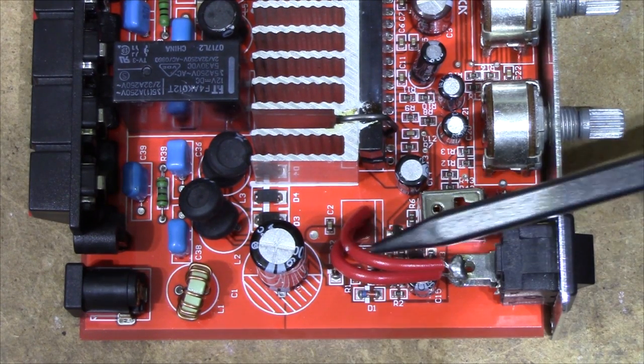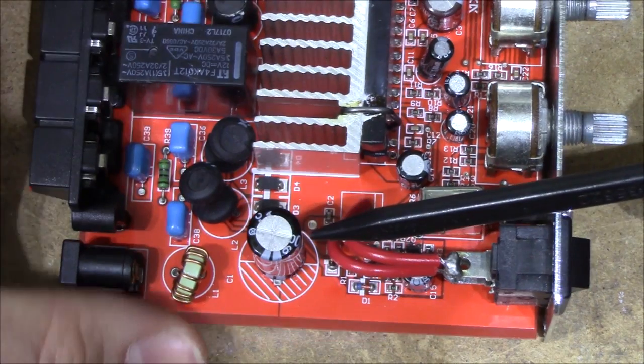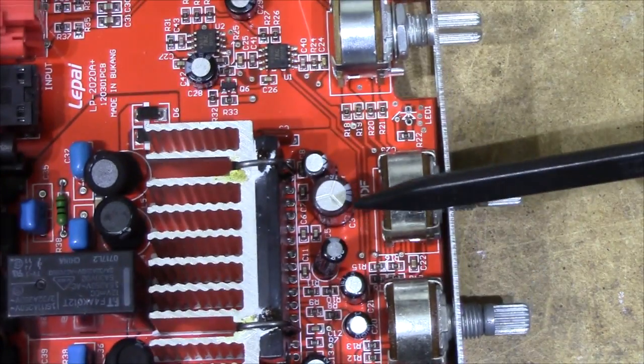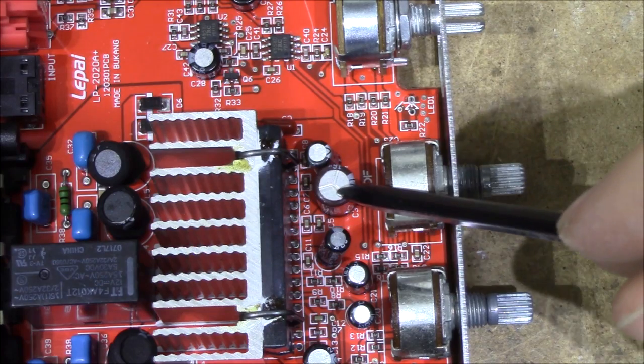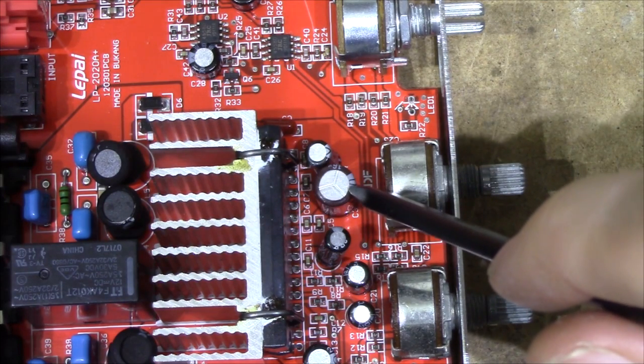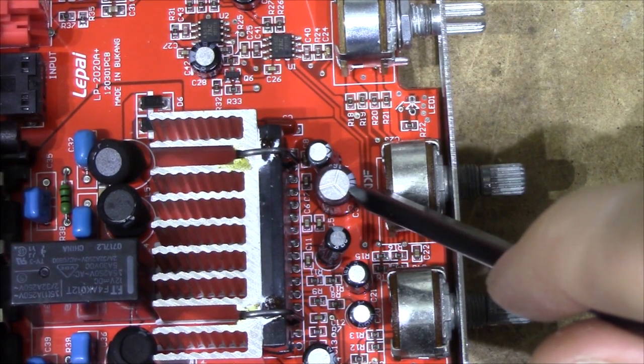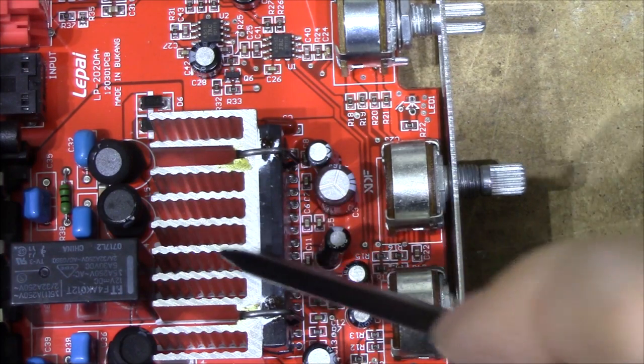After going through the switch and the 22,000µF 16V capacitor, the power goes to this 470µF 16V capacitor and then into the chip.